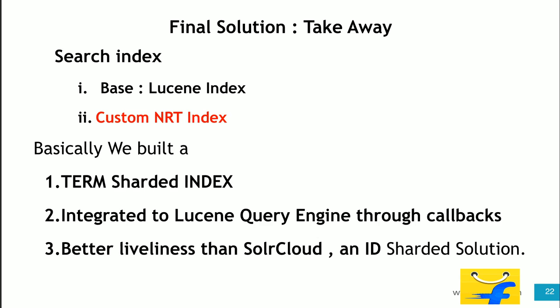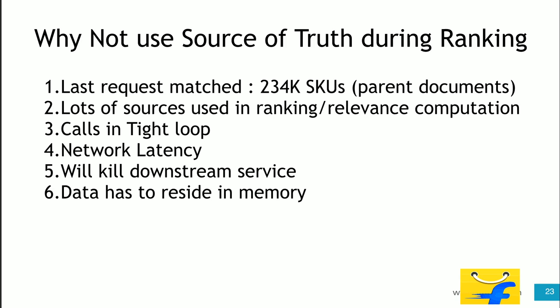The final takeaway I want everybody to take here: we built a custom NRT index and plugged it with the Lucene base index. Essentially what we built is a term-sorted index, and I am going to teach you how we built it and integrated it with the engine via callbacks. The reason we couldn't just hit the services to get availability and pricing is that 250k+ SKUs may appear in the top results — I can't make 250k calls to the promise engine to get the right data. Network latency will kill the downstream service; you have to have all this data streamed to you.